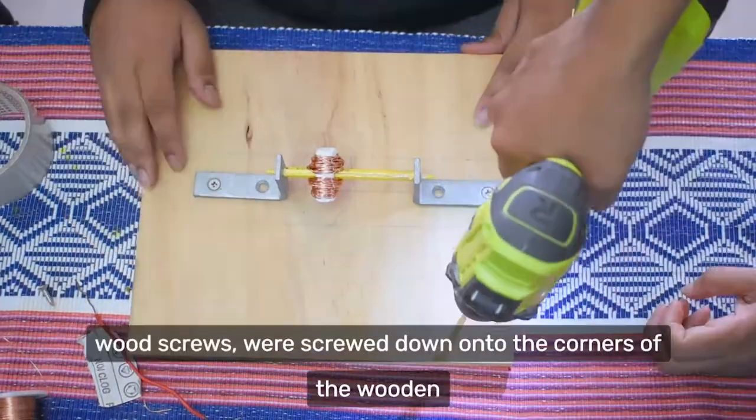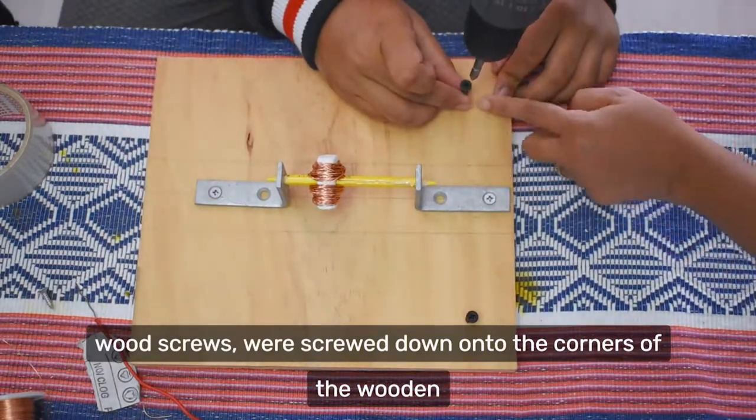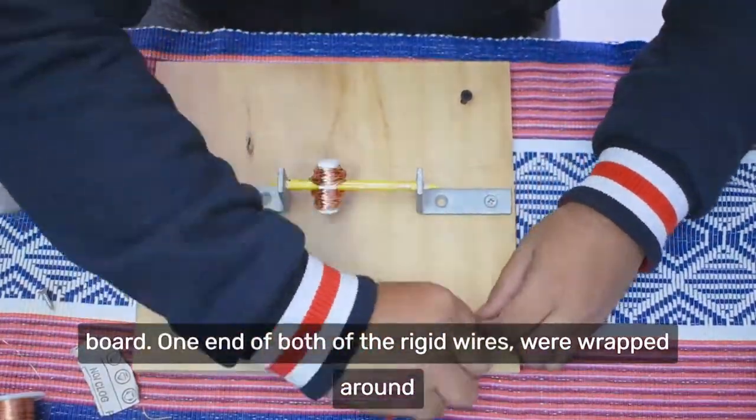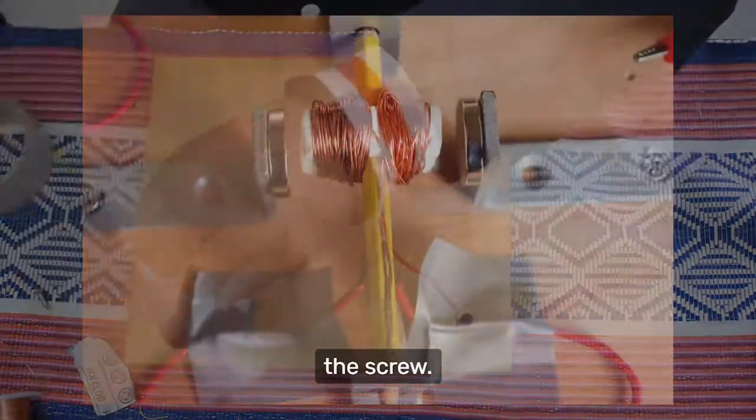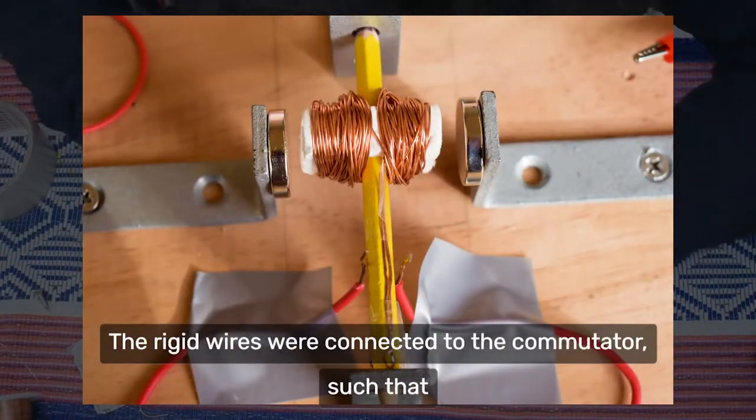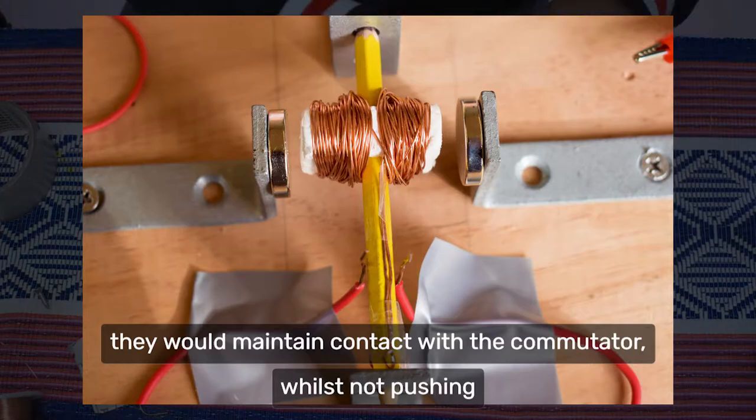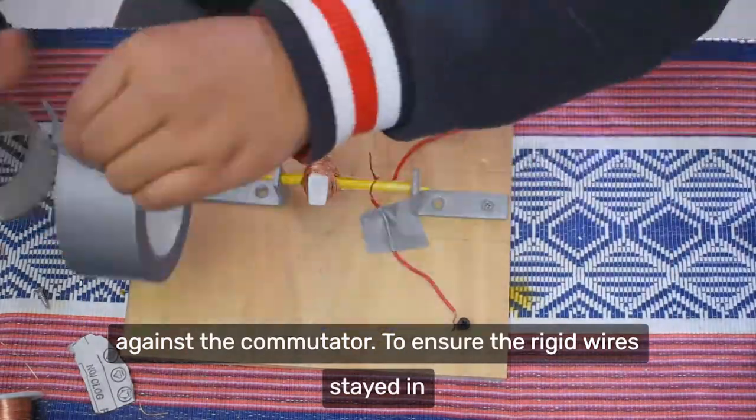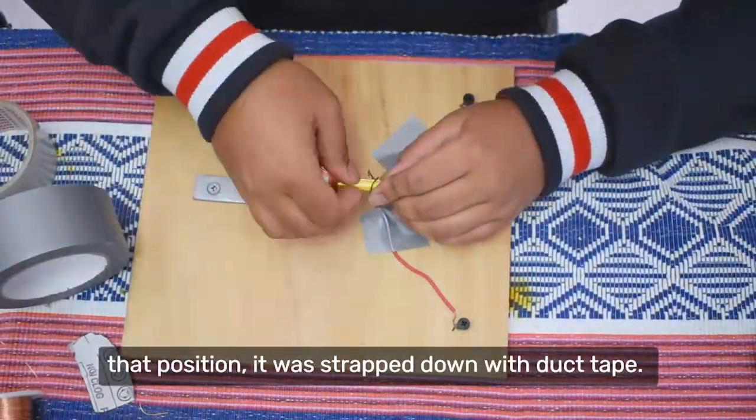6. The two 5mm wood screws were screwed down onto the corners of the wooden board. One end of both of the rigid wires were wrapped around the screw. The rigid wires were connected to the commutator such that they would maintain contact with the commutator whilst not pushing against the commutator. To ensure the rigid wires stayed in that position, it was strapped down with duct tape.